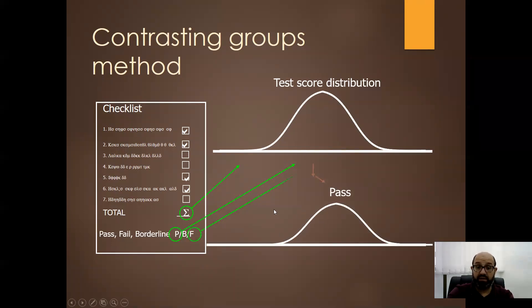One for the passing students and another curve for the failing students. We totally ignore the borderline students. And the intersection between these two curves is our passing score that applies for the whole batch.